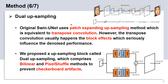For the up-sampling method in our model, the original Swin-UNet uses patch-expanding up-sampling, which is equivalent to transpose convolution. However, transpose convolution usually causes the block effect, also called checkerboard artifacts, which seriously influences denoising performance. So we propose the up-sampling module called dual up-sampling, which comprises well-known up-sampling methods — bilinear and pixel-shuffle — to prevent the checkerboard artifacts caused by transpose convolution. Here is the architecture of the proposed dual up-sampling module.